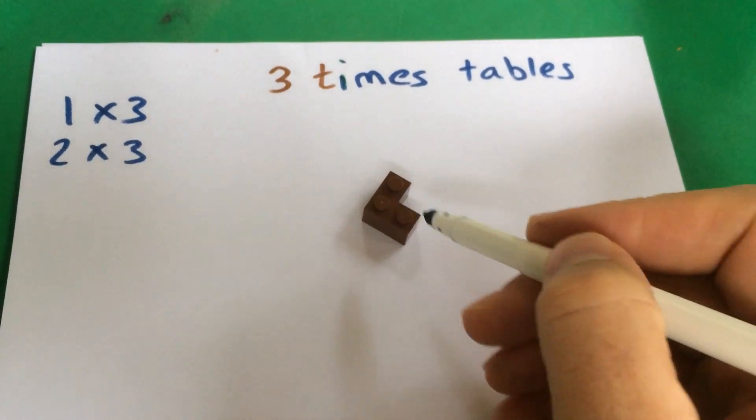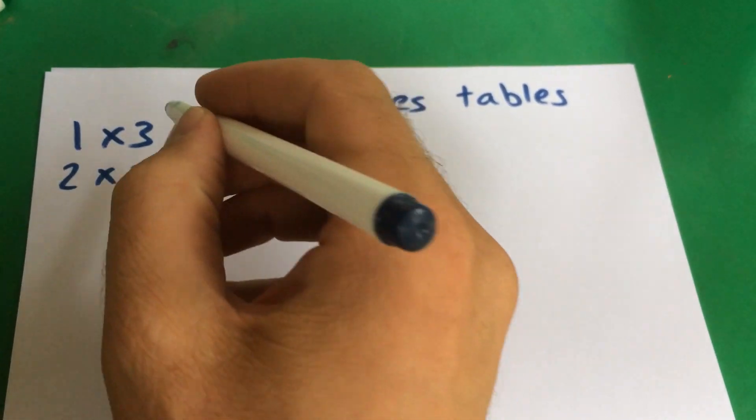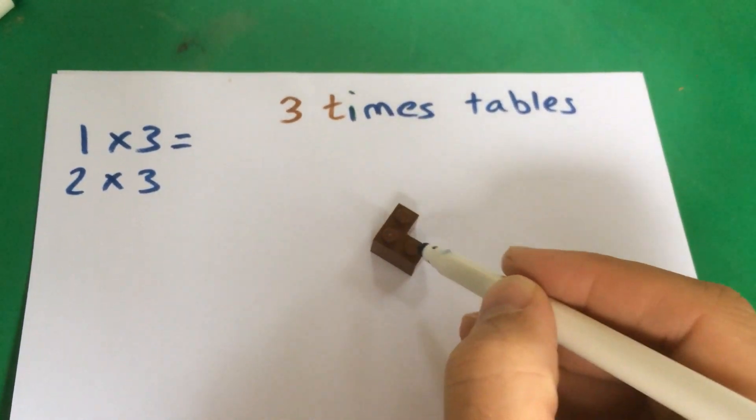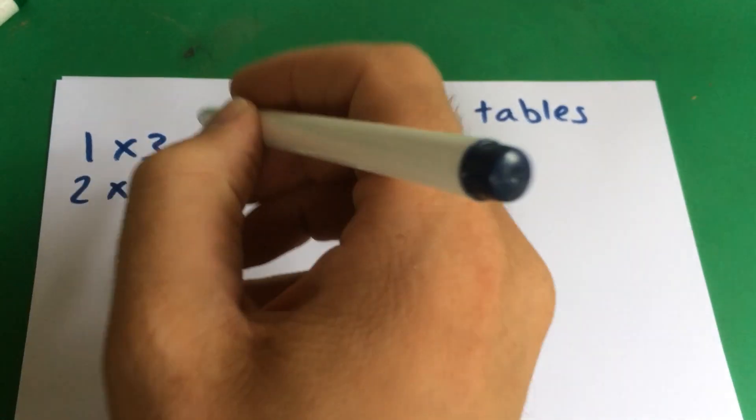If you look at the little dots on the top, the studs, how many have I got if I've got one lot of three? How many have I got there? We've got three. Three?